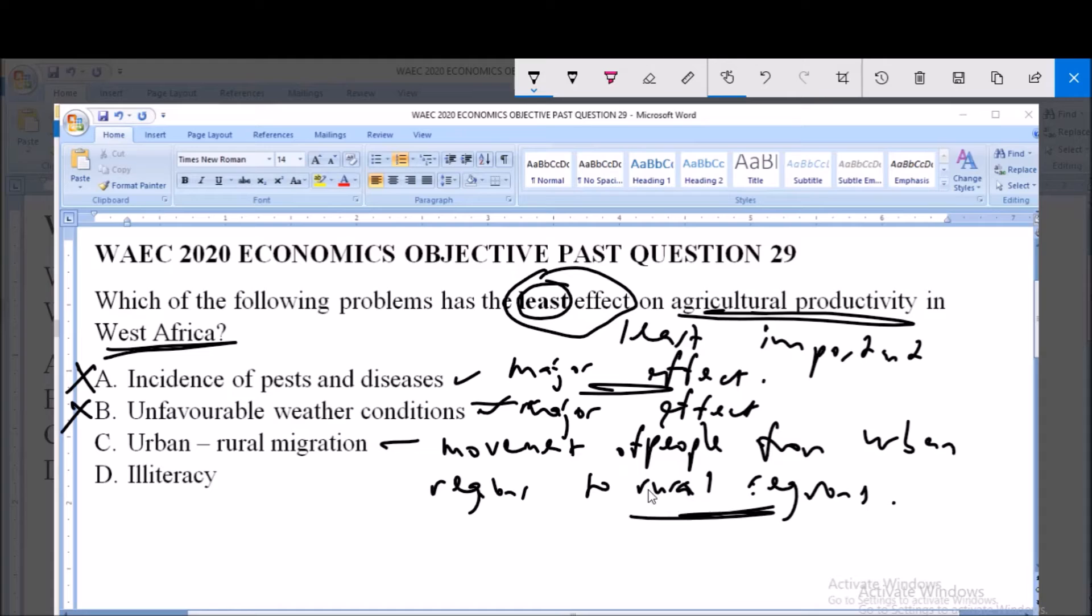you even have more hands for agricultural productivity or for agricultural procedures as most agricultural procedures in West Africa is carried out in the rural regions.